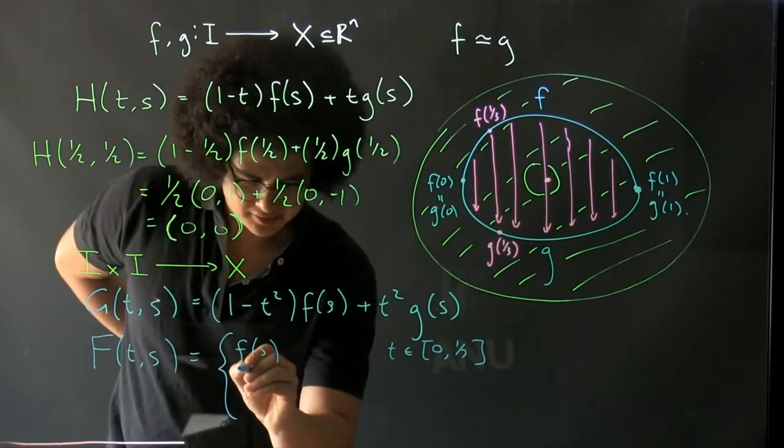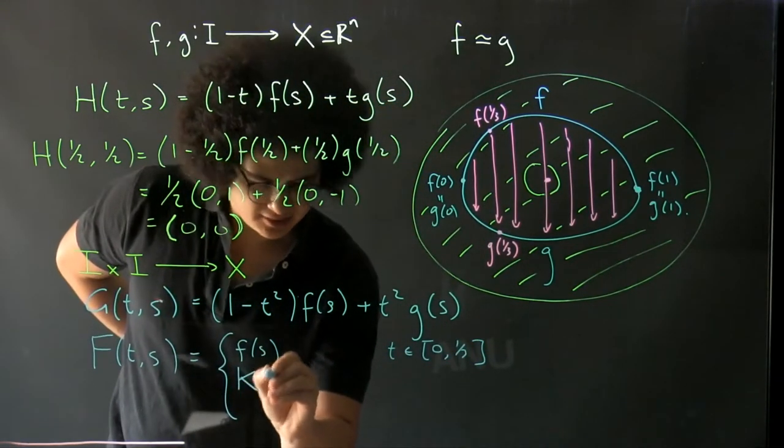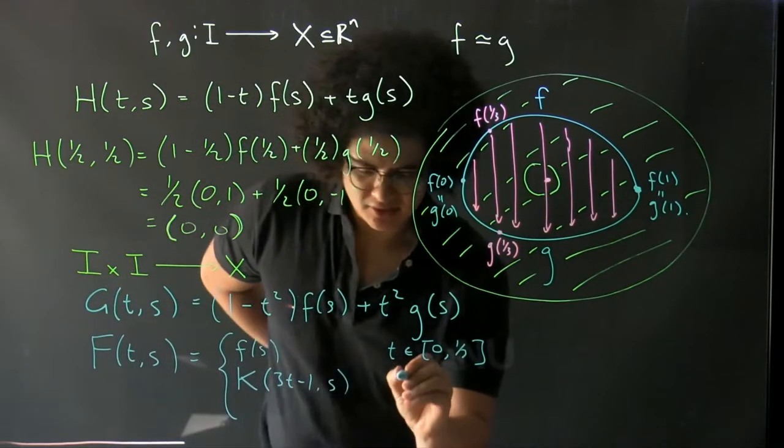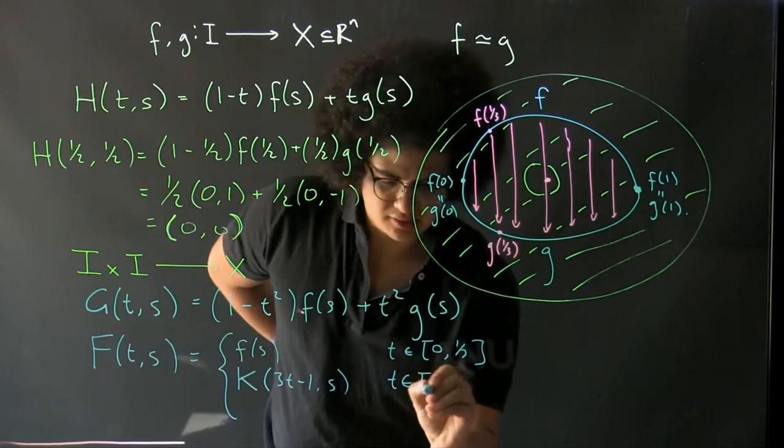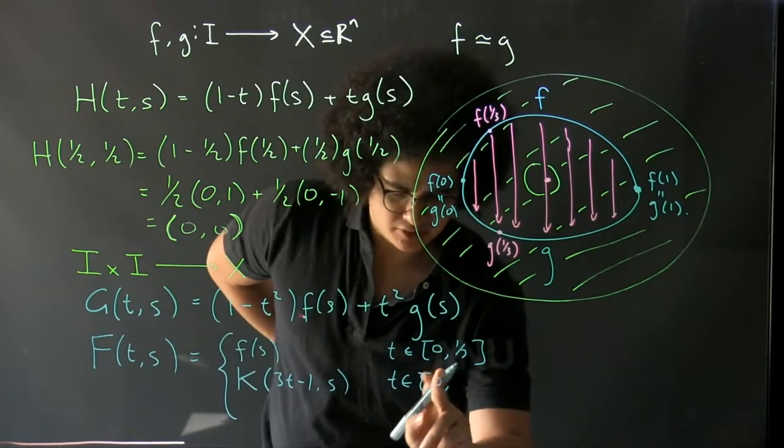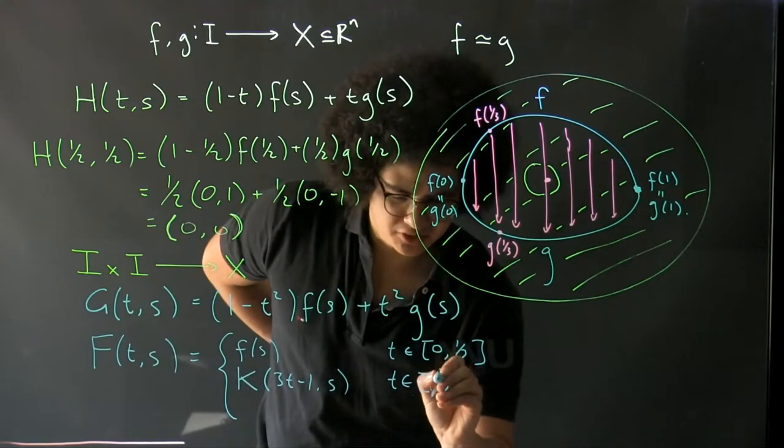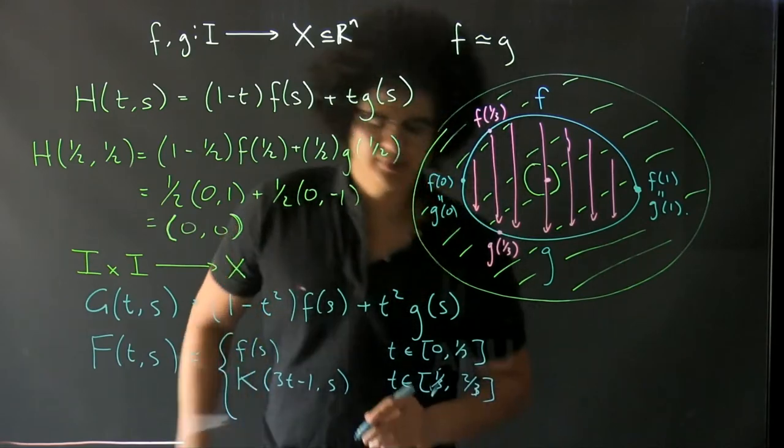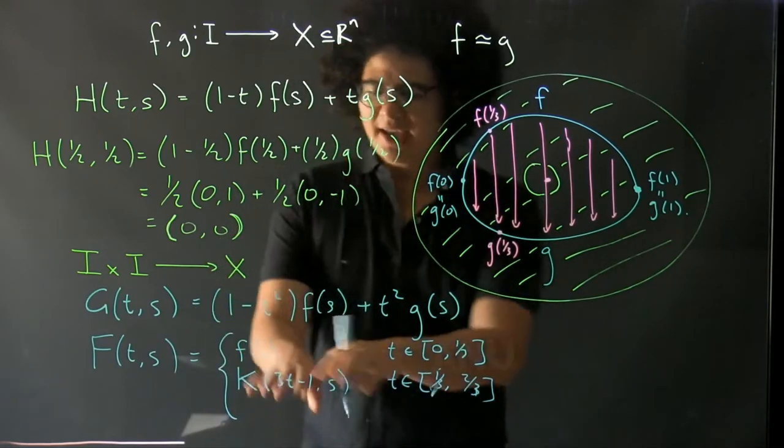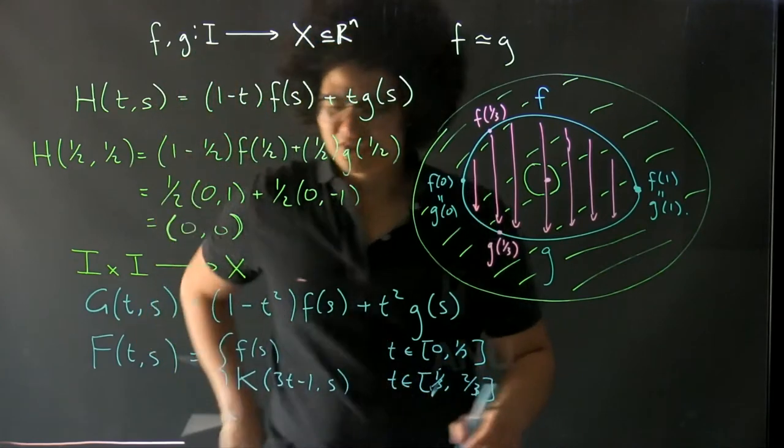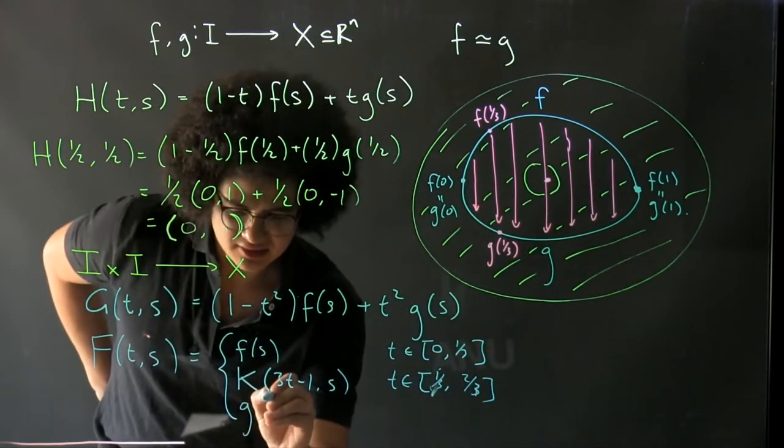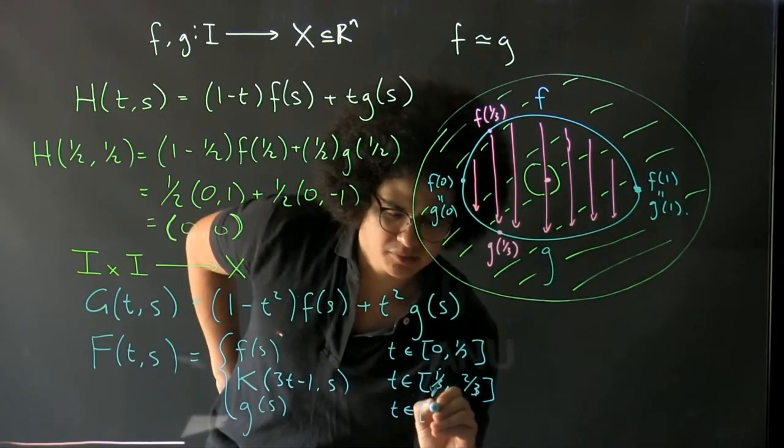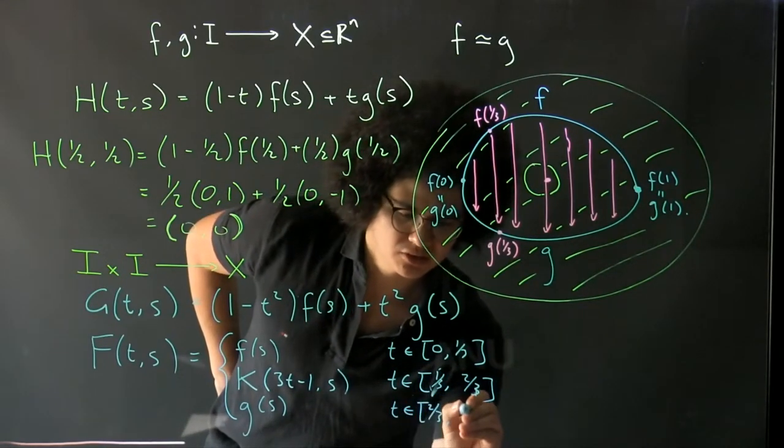We will make it k(3t-1, s) for t in, sorry, a third to two thirds, where k is any homotopy we already had between f and g. And then it's g(s) from t from two thirds to one.